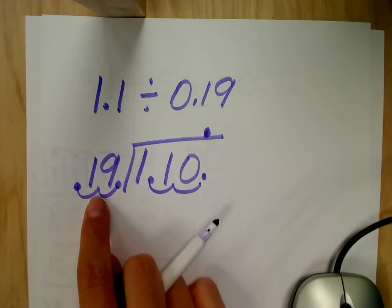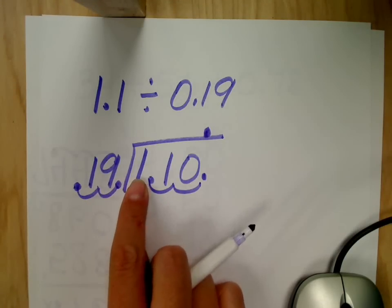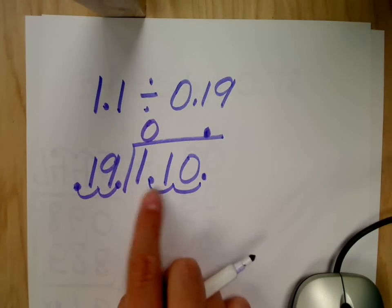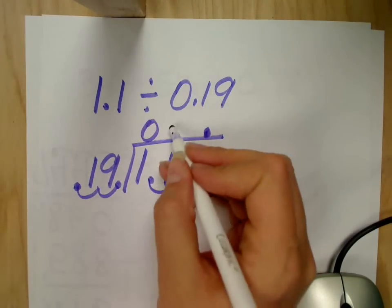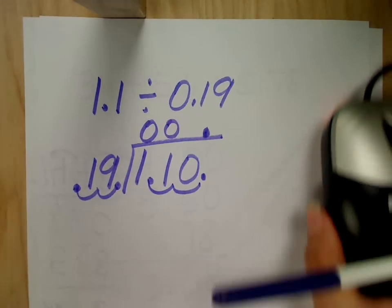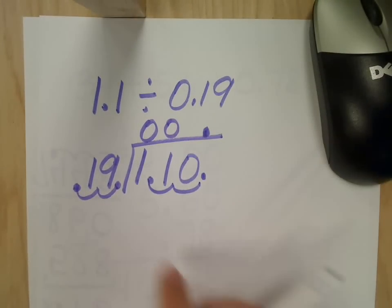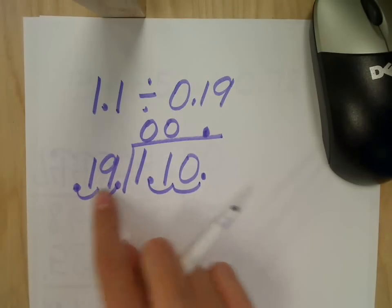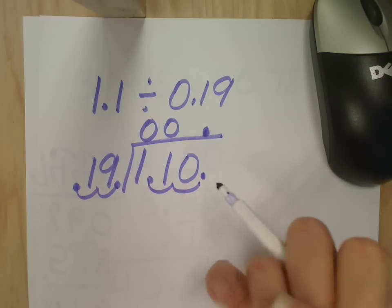So the question is, how many times does nineteen go into one? Zero. Zero times. Put it in your answer. Nineteen into eleven? Zero. Also zero times. So now it's nineteen into a hundred ten. We can round this. We can think, okay, twenty. How many times would twenty go into one ten? We can count by twos. Five. Two, four, six, eight, ten. That'd be five times. I'm going to say this is probably five.